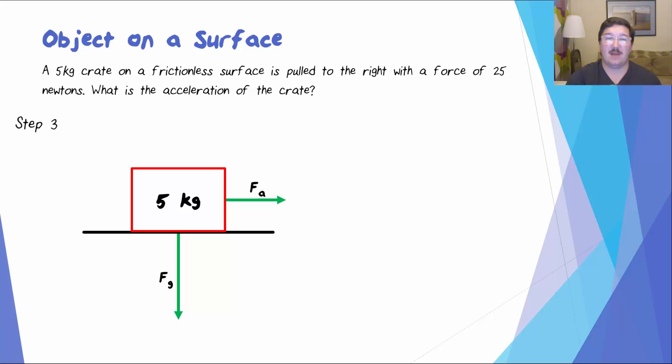Step three is to label the magnitude of the forces if and when we know them. Well, we know that the applied force is 25 newtons. And if we do a little calculation on the side, we can find that the weight of this object is 49 newtons. The final step is to use Newton's second law to finish the problem. We have A equals F net over M. And in this case, horizontally, we only have one force, the applied force. So I guess we could write 25 newtons minus 0 newtons. If we finish this calculation, we find that the acceleration of this crate is 5 meters per second squared.